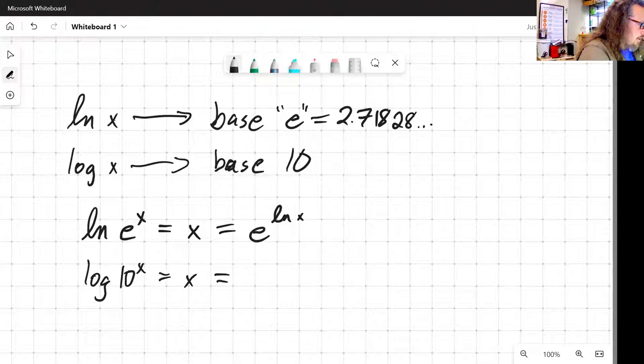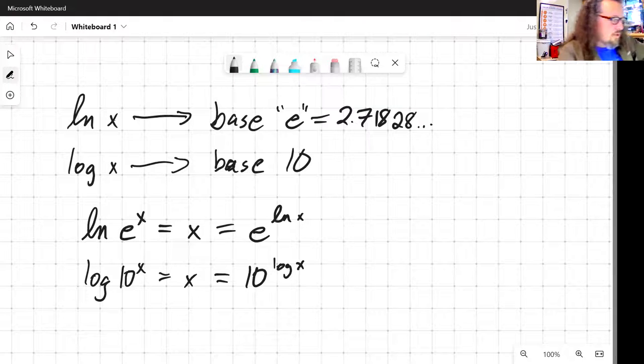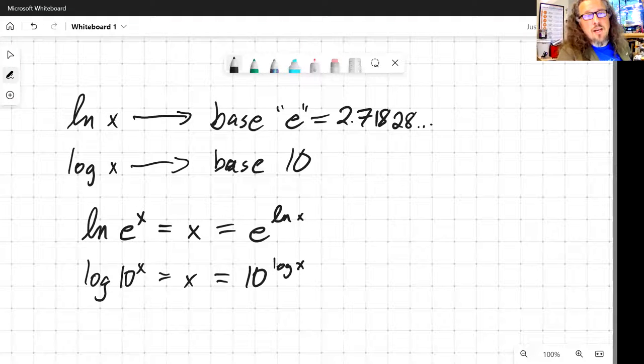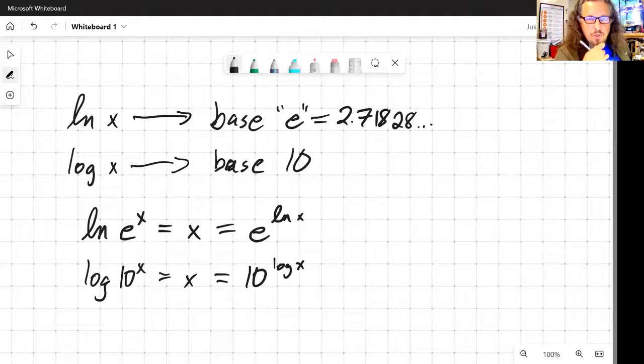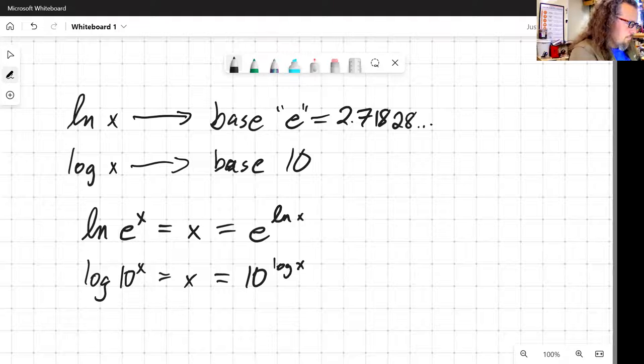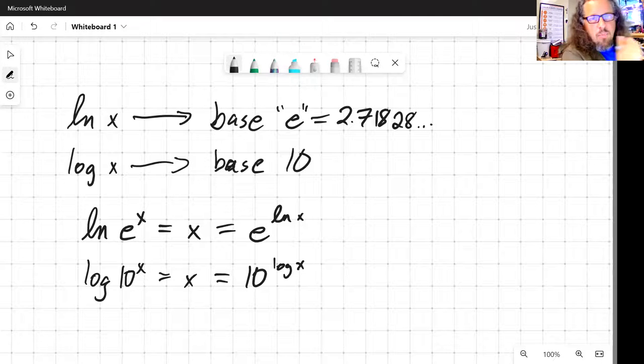Same thing in common log, log base 10. Log of 10 to the x is equal to x, and 10 to the log x is also equal to x. So that's how we invert those. If you've got a log you want to get rid of, use its base in one direction or another. The reason logs are useful, the reason logs help us with a lot of things, is because of some of the other tricks that we can play.